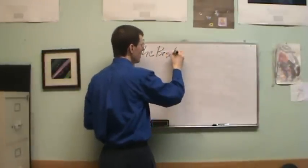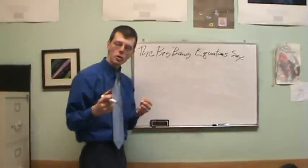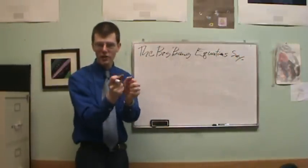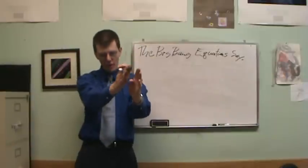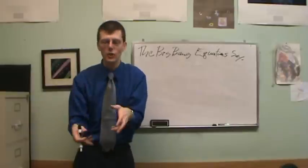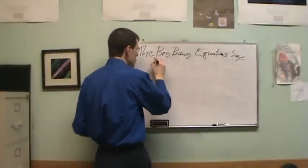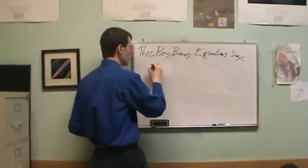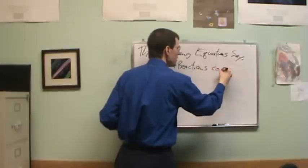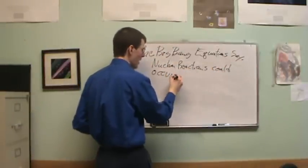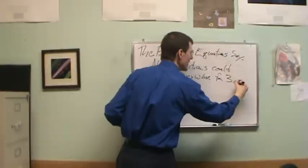The Big Bang equations say the universe was hot and dense enough to do nuclear fusion reactions to create different atomic nuclei for only three minutes. So there's the instant beginning, and for three minutes you can do stuff, and then it gets cool enough, there's not enough energy around, you're no longer as hot as the core of a star. Nuclear reactions could occur everywhere for three minutes.